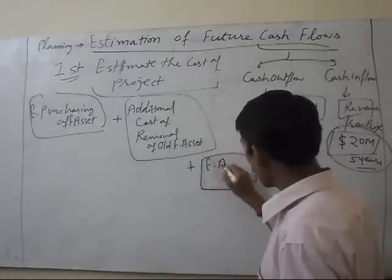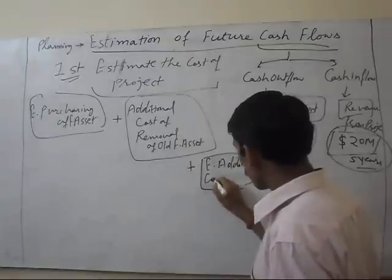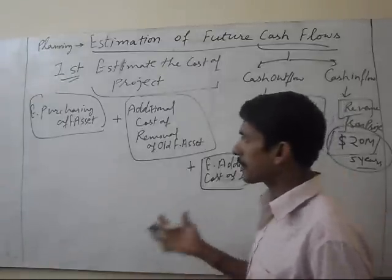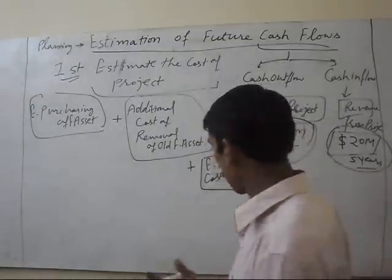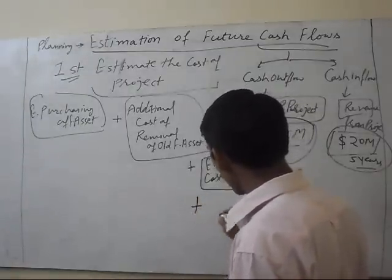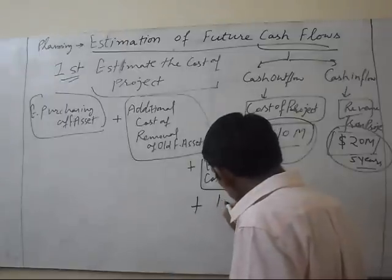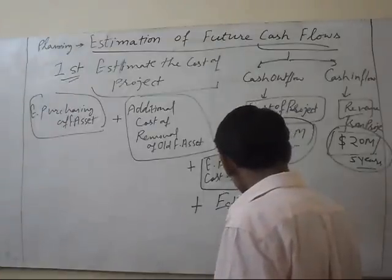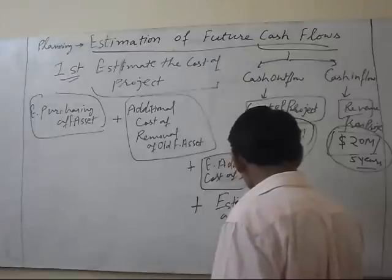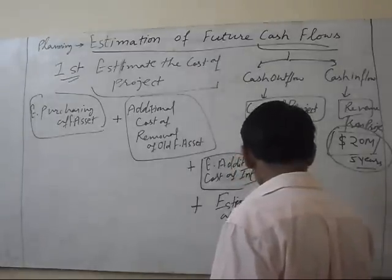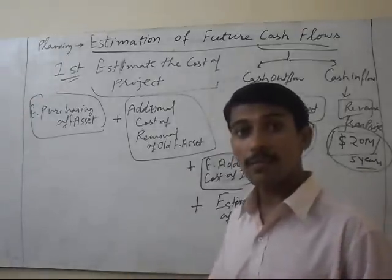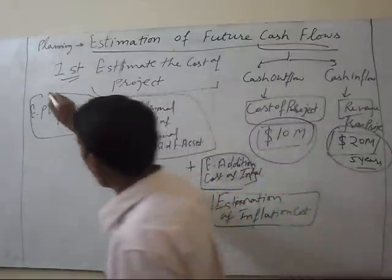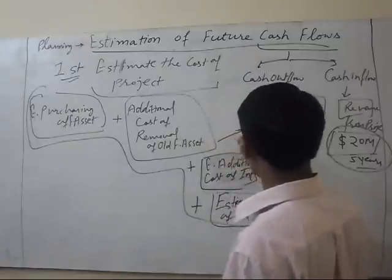Third, the additional cost of installation of the fixed asset in the plant or factory. Plus, estimation of inflation cost — because during increasing prices our cost will increase, so we add inflation cost. All these costs are part of the cost of the project.